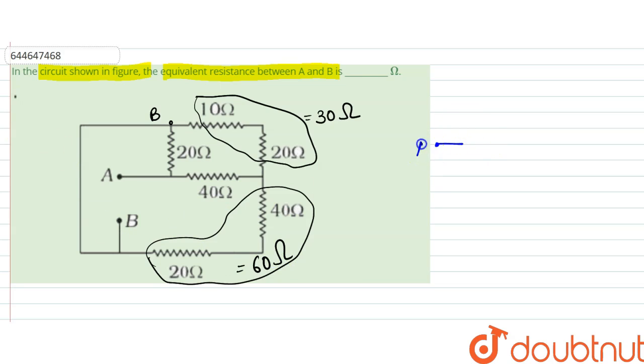This is A, let us say. So we have here 20 ohms. From here, we have this to be 30 ohms. Here we have 40 ohms still. Let's say this point is O.